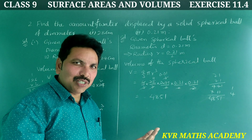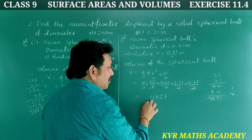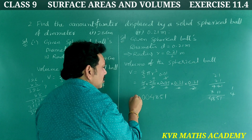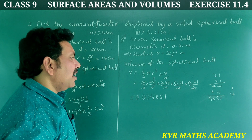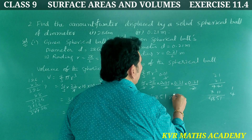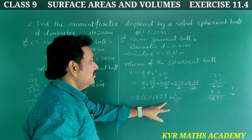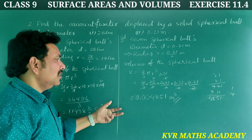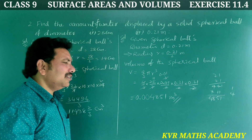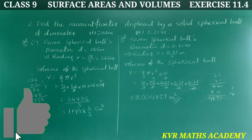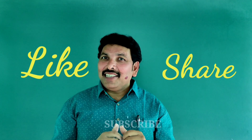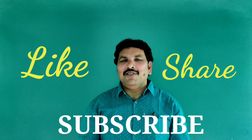Placing the decimal point 6 digits from the right gives 0.004851 meter cube. Is it clear? Yes, note it all down. Thank you very much.